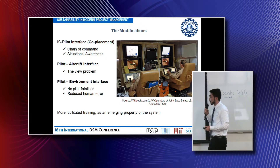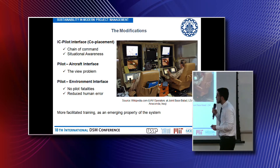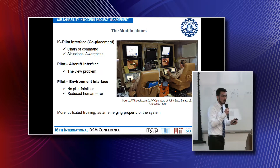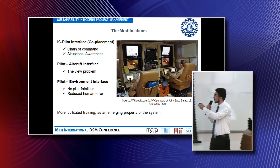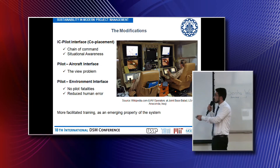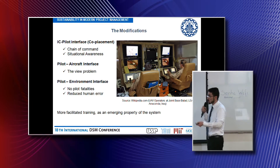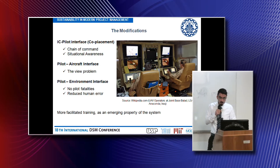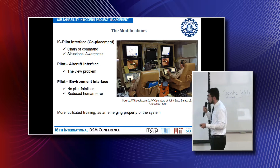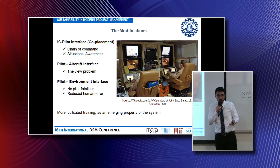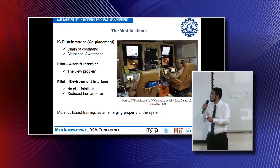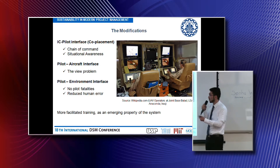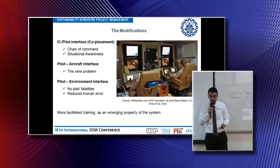And last but not least is the interface between the pilot and the environment. The pilot is actually relocated from a very dangerous and hostile environment and placed in the ground station near the incident commander. This will hopefully reduce the stress levels felt by the pilot, which will hopefully reduce human error. And on top of that, if anything goes wrong with the flight and the air tanker crashes, the pilot is always safe and sound. So we will see no more pilot fatalities in the future of aerial firefighting.